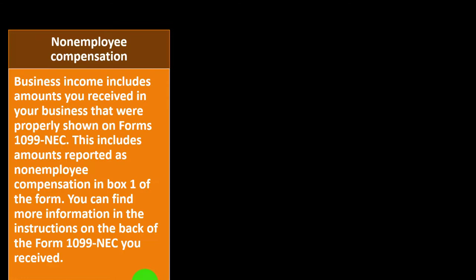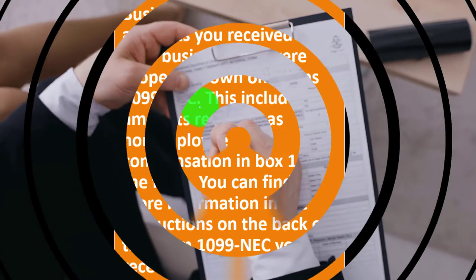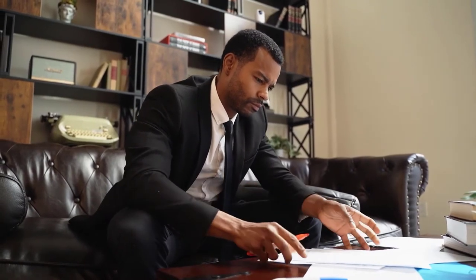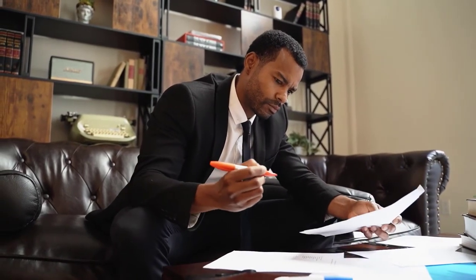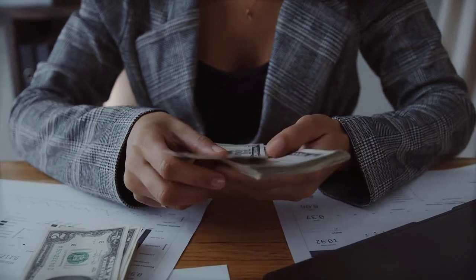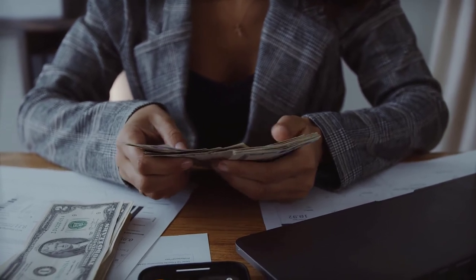Non-employee compensation business income includes amounts you receive in your business that were properly shown on Forms 1099-NEC. If you're a sole proprietor or contractor working for other businesses like corporations, they will issue you a Form 1099 reporting what they paid you. Note that the amount reported is the gross amount — not net — meaning they don't account for your expenses. You must report all expenses on Schedule C; otherwise, the IRS will only have the 1099-NECs and may try to charge you on gross income instead of net.